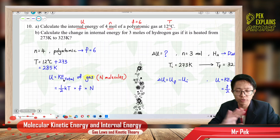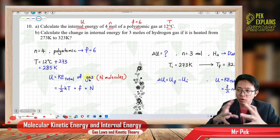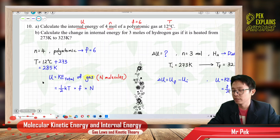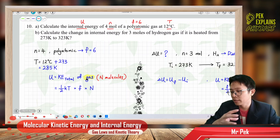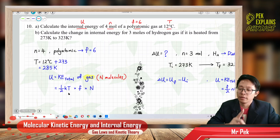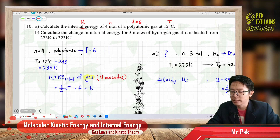Total kinetic energy means it refers to all degrees of freedom of all the gas molecules. The whole gas has many molecules, which is N molecules — N is the total molecules in the gas. So internal energy is the total kinetic energy of the whole gas. We start with the kinetic energy for 1 degree of freedom, which is ½kT, times the number of degrees of freedom. For a polyatomic gas, F equals 6.